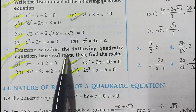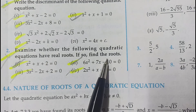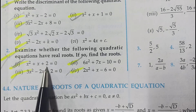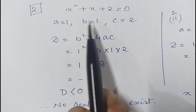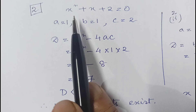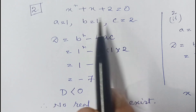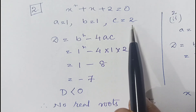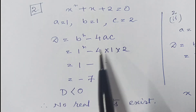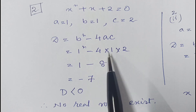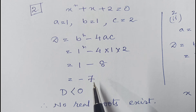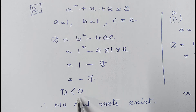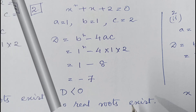Question 2: Examine whether the following quadratic equations have real roots; if so, find the roots. First, we check whether roots are real; if yes, we find them. Part 1: x² + x + 2 = 0. Here a = 1, b = 1, c = 2. Discriminant = 1² − 4(1)(2) = 1 − 8 = −7. Since D = −7 < 0, no real roots exist.